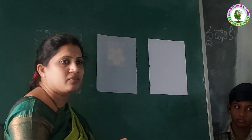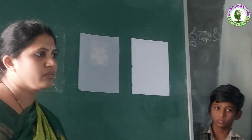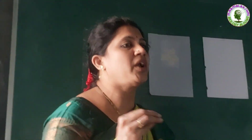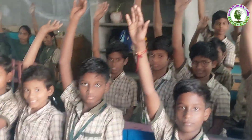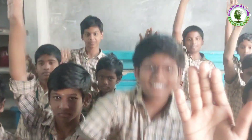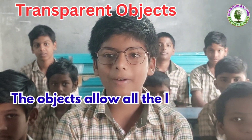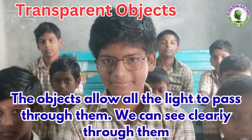Understood, children? Is it clear to you? Can I ask some questions to you? Can anyone say what are the transparent objects? Very good. What are transparent objects? Objects that allow all the light to pass through them — we can see clearly through them. Yes, very good. Give him applause.